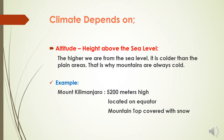Altitude, or height above sea level, is another factor that determines the climate of a place. The higher we are from sea level, the colder it is compared to plain areas. That is why mountains are always cold. This can be understood with the example of Mount Kilimanjaro in Kenya, a 5,200-meter-high lofty mountain. It is located almost on the equator, a warmer and wetter region, but still its top is always covered with snow due to its height.